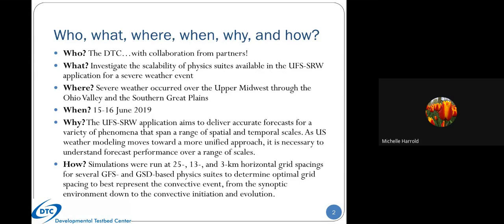We ran simulations at 25, 13, and 3 kilometers for several physics suites to best determine the optimal grid spacing to represent the convective event we were looking at. We took it from a synoptic approach all the way down to the convective scales to understand how and why the different schemes were performing the way they were.